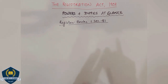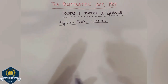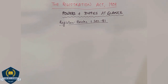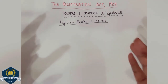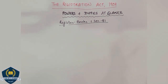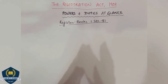Now we are moving to another part of this very important act, and this topic is also very important: what are the powers and duties? Powers and duties of registering officers — we will mainly understand sections 51 to 80. Many students are confused about which register can be asked about, and what the powers and duties are, including the subregistrar section. So I have made this session specifically to clear that confusion.